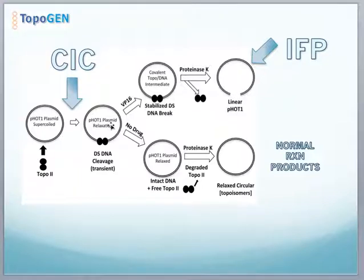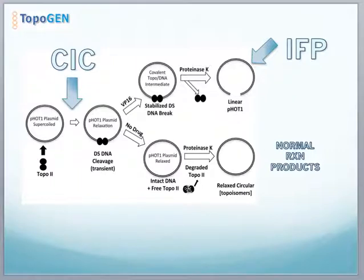Shown below is the reaction without drug, and you can see that the pHOT1 DNA is fully relaxed with no discontinuities or breaks. When you degrade the free topo II with proteinase K, this generates relaxed circular topoisomers, which are the normal reaction products as indicated here.